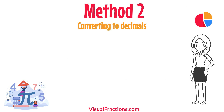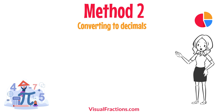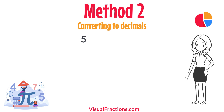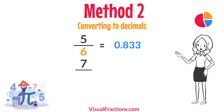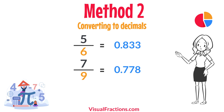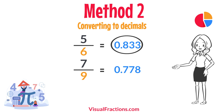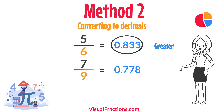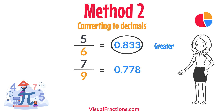For a second method, let's convert each fraction to a decimal. Using a calculator, divide 5 by 6 to get approximately 0.833, and divide 7 by 9 to get approximately 0.778. This calculation shows that 0.833 is greater than 0.778, confirming that 5 sixths is indeed greater than 7 ninths.